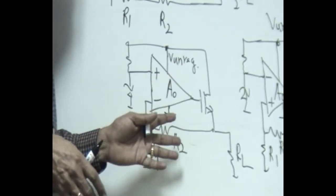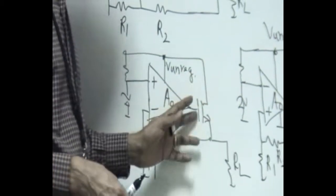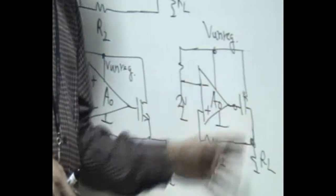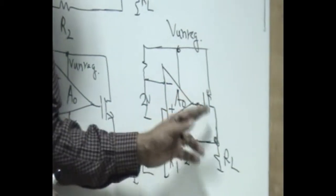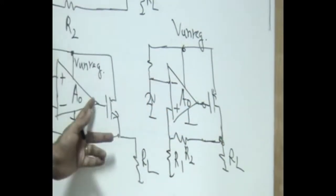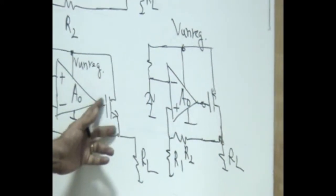What is the remedy for this? You can use, instead of an n-channel MOSFET, a p-channel MOSFET like this. The moment you use a p-channel for driving this, there is a gain coming into picture in the loop. Earlier this was a voltage follower.